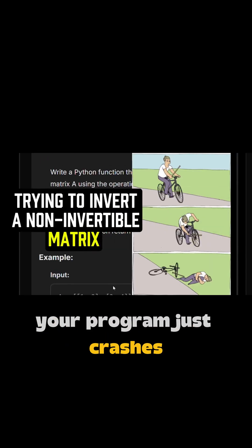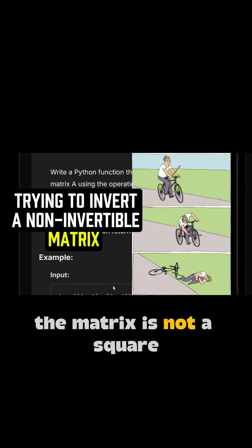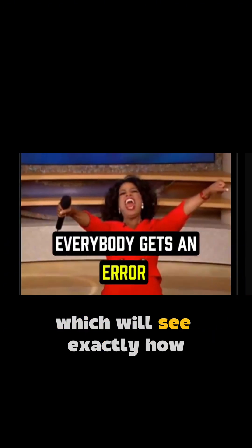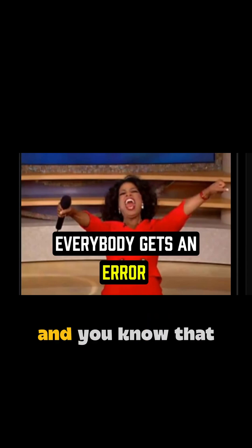Visible errors are pretty easy. This happens when your program just crashes, where it says listen, I had an issue, the matrix is not a square, it's divide by zero error, which we'll see exactly how you get a divide by zero error. And this will just crash your program and you know that your matrix is not invertible.